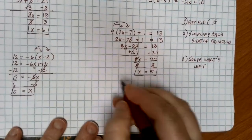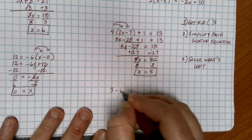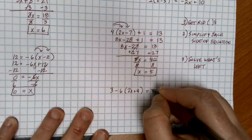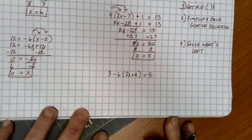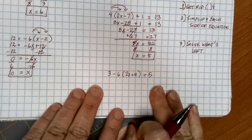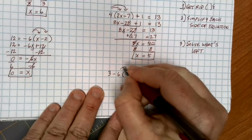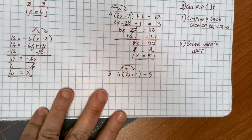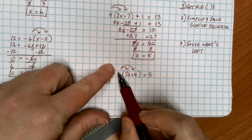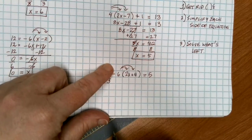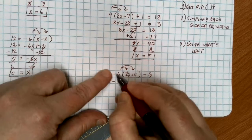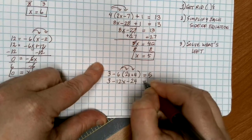As one final example, let's suppose that I have 3 minus 6 times the quantity 2x plus 4, equals 5. I want to solve this equation for x — x is trapped inside the parentheses and there's a lot going on. First, I want to get rid of the parentheses. Notice there's a 3 out in front that I still have to keep. Now I'll distribute the negative 6 through each of these values. Negative 6 times 2x gives me negative 12x. Negative 6 times 4 gives me minus 24, equals 5.